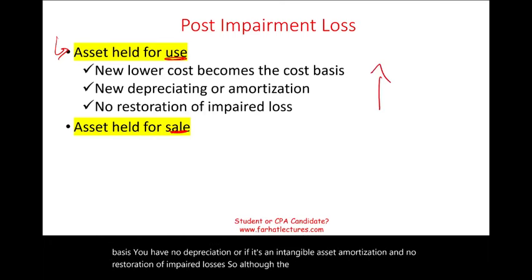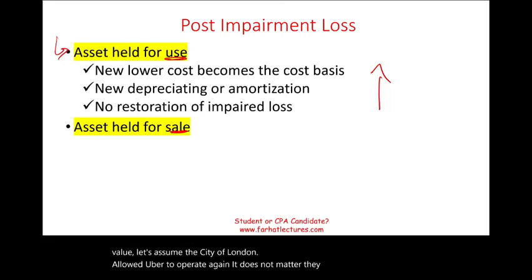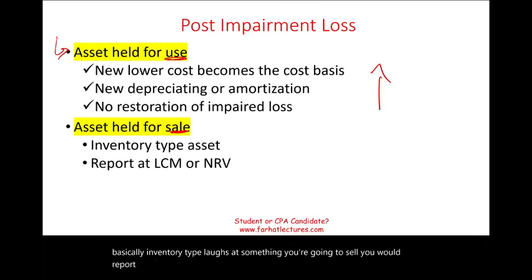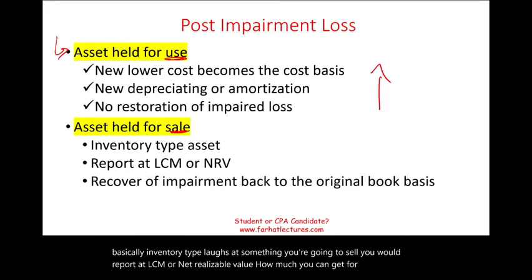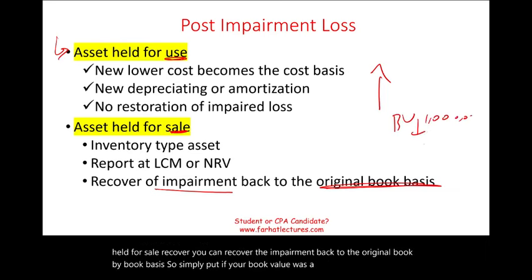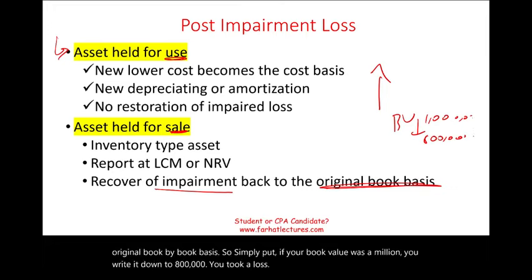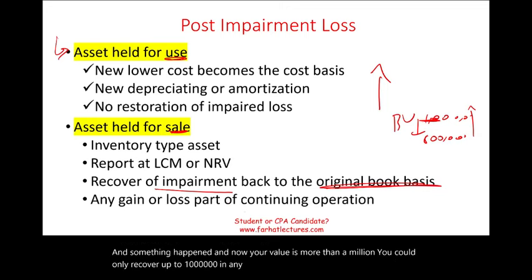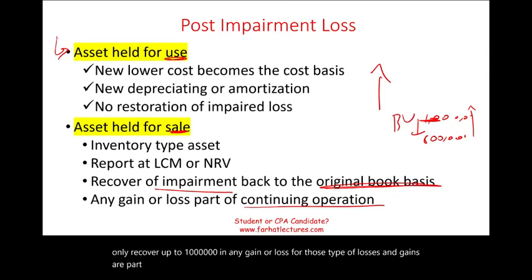For example, even if the city of London allowed Uber to operate again, Uber cannot write up assets held for operation. If the asset is held for sale — essentially inventory-type assets — you report at lower of cost or market or net realizable value, and you can recover the impairment back up to the original book value. Any gains or losses are part of continuing operations.